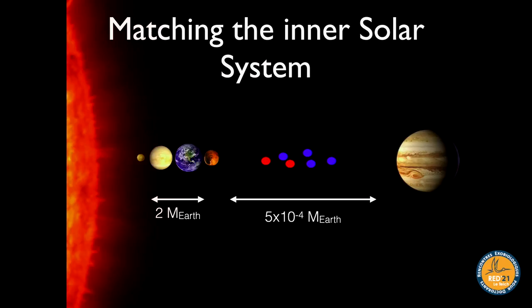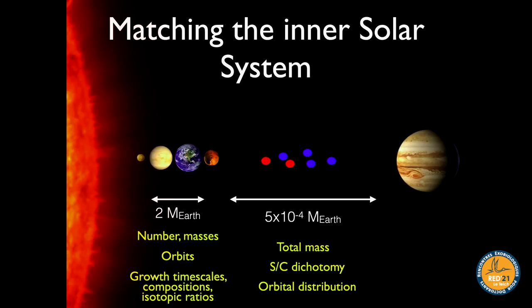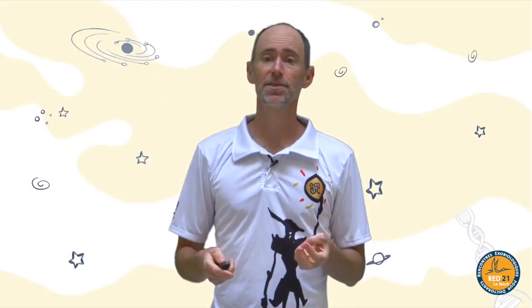What are we really trying to match in the inner solar system? There's about two Earth masses worth of rocky planets, and less than a thousandth of an Earth mass worth of asteroids. More specifically: the numbers, masses, and orbits of the rocky planets; growth timescales for Earth; compositions and isotopic ratios for the asteroid belt; the total asteroid belt mass; the inner S-type vs outer C-type dichotomy; and the orbital distributions.